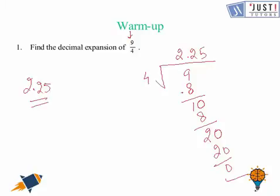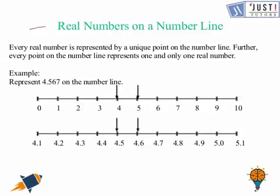Now we move ahead to our topic which is about real numbers on a number line. So every real number is represented by a unique point on the number line. So that means we can represent any real number on a number line.